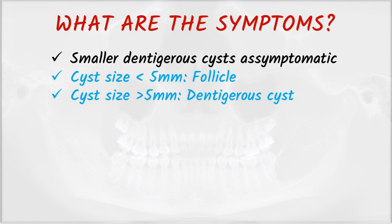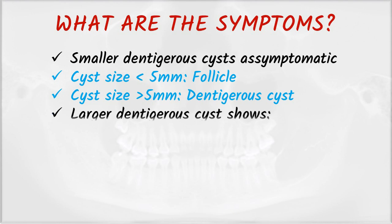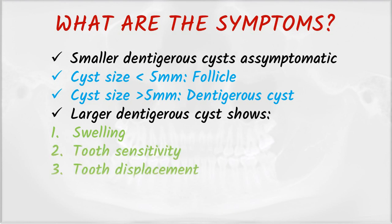What are the symptoms? A smaller cyst is asymptomatic. If the size is less than 5 mm it is called a follicle; if greater than 5 mm it is called a dentigerous cyst. Symptoms shown by a larger cyst include swelling, tooth sensitivity, and tooth displacement.